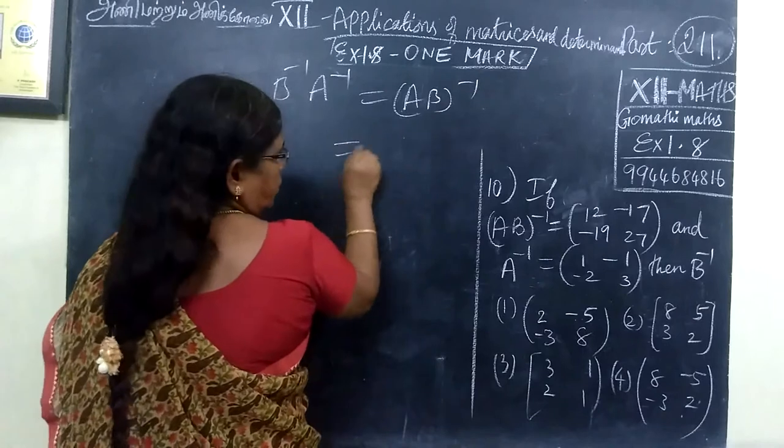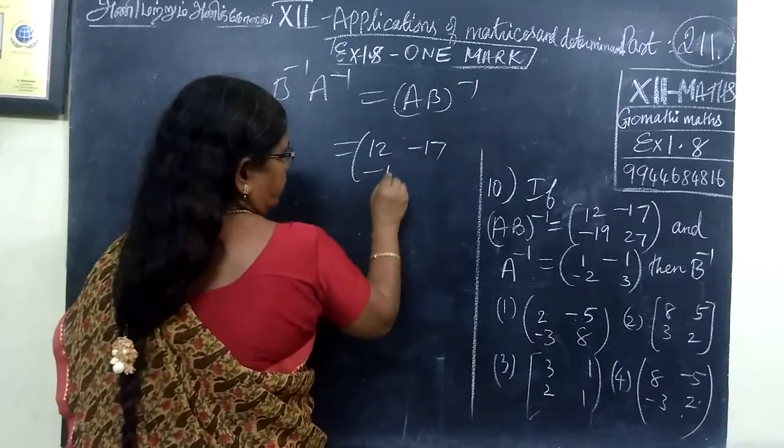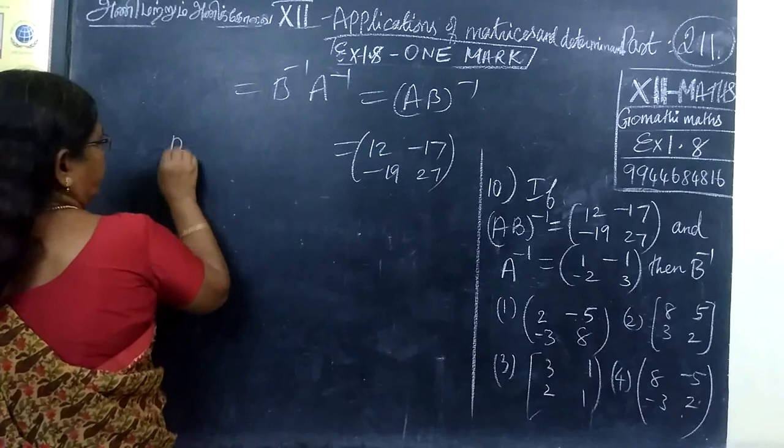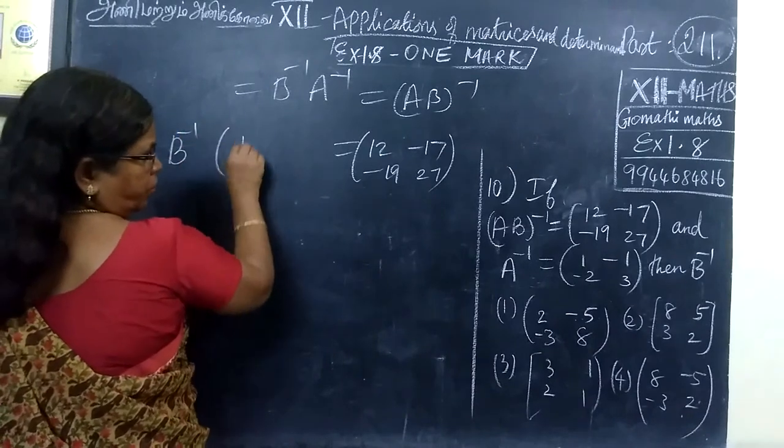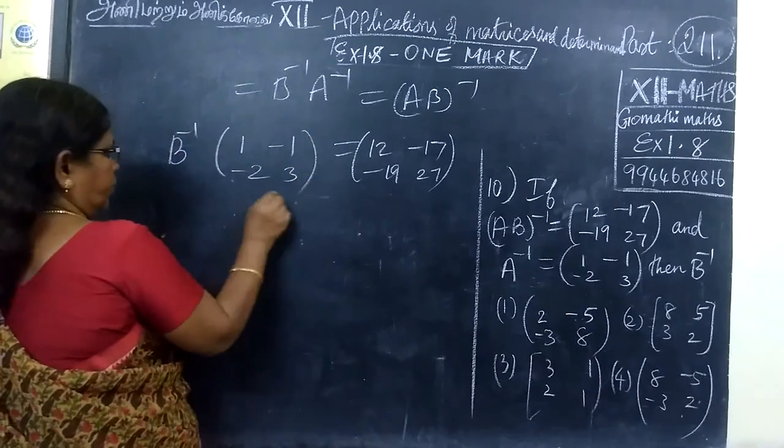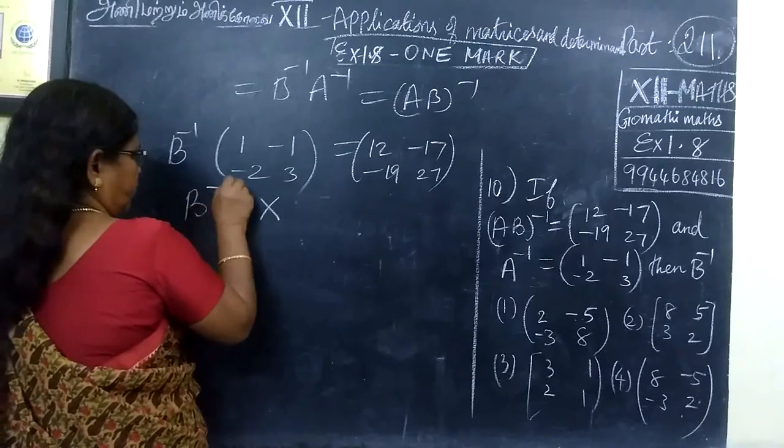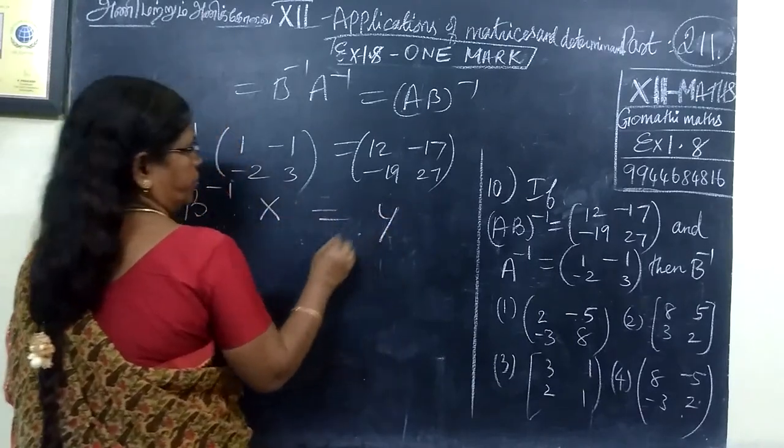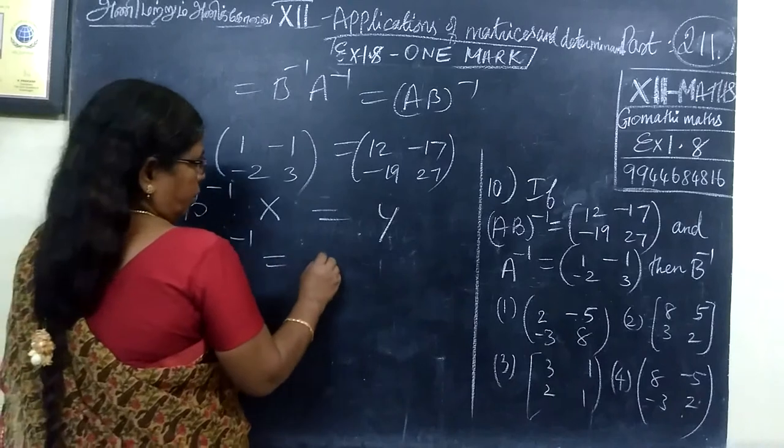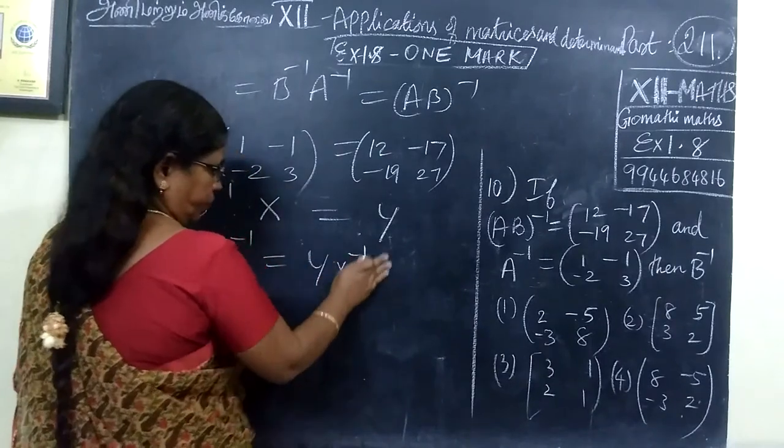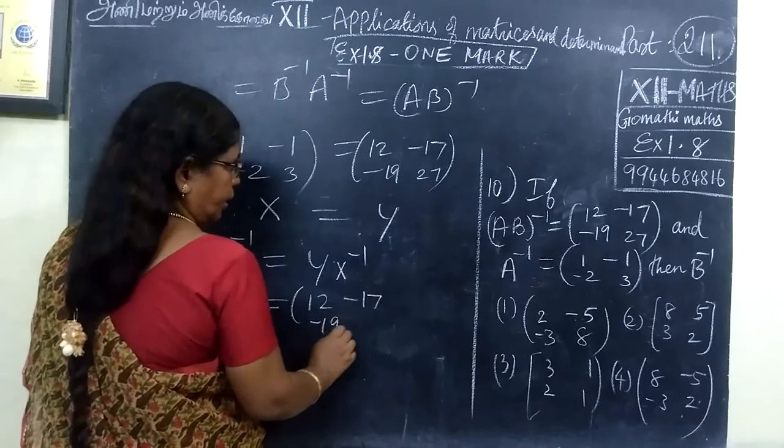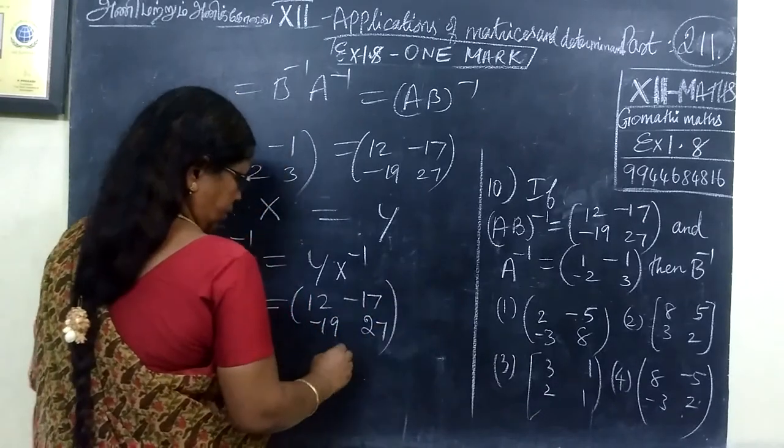AB whole inverse value is 12, this is the other side. So this is 12 minus 17, minus 19, 27. Then A inverse, B inverse is 3. So B inverse is 1 minus 1, then minus 2, 3. Therefore, this is some X, B inverse, this is some Y.